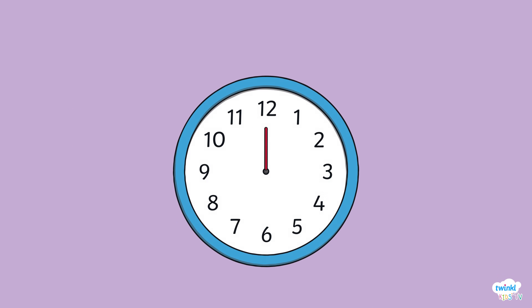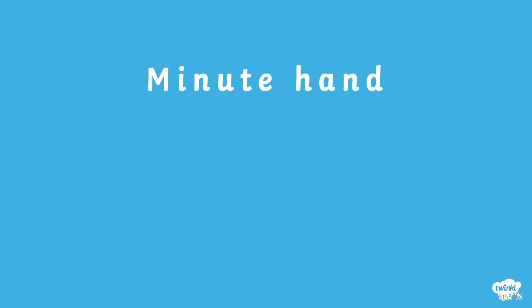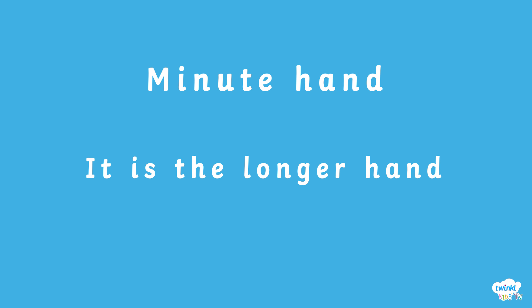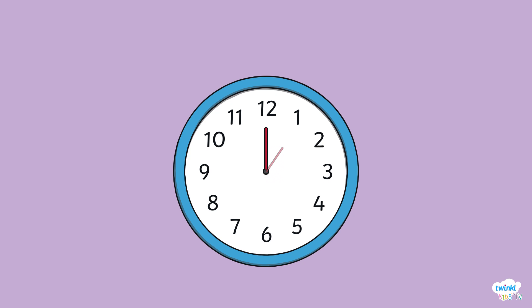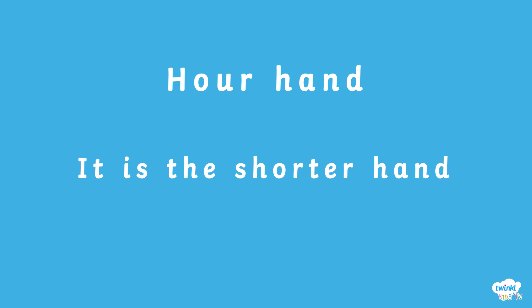We have two types of hands on the clock. This is the minute hand. The minute hand is the longer hand. The other type of hand is called the hour hand. This hand lets us know what hour it is, and it is the shorter hand.